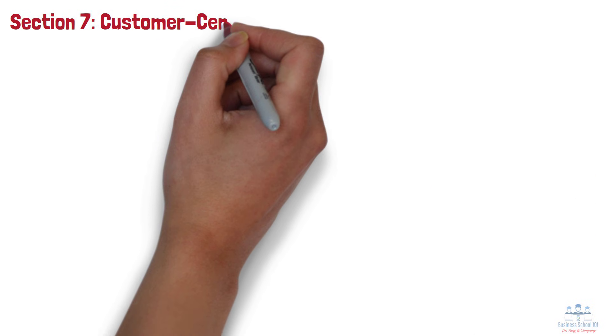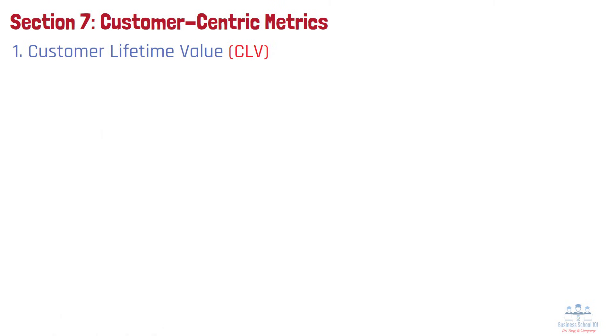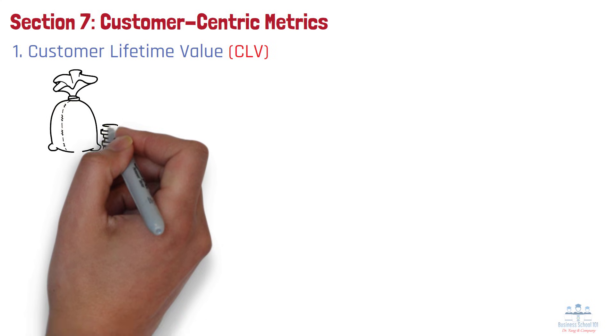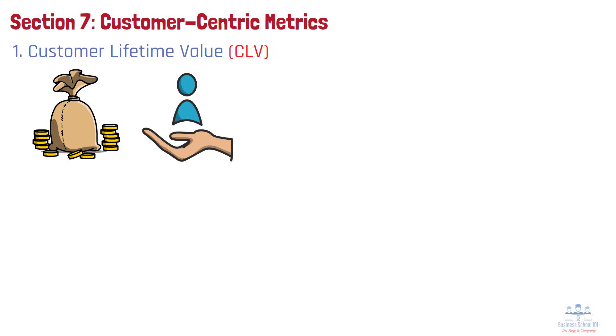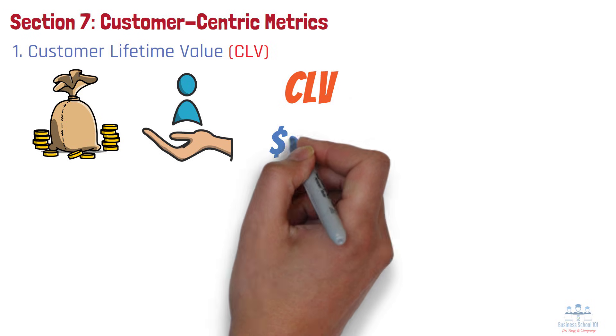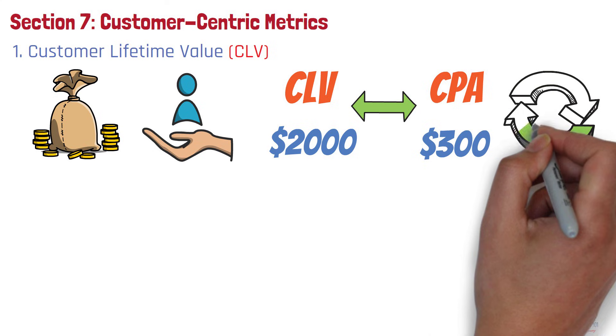Section 7. Customer Centric Metrics. Number 1. Customer Lifetime Value, CLV. It estimates the total revenue a business can expect from a single customer over their relationship. It helps in understanding how much you can spend to acquire and retain customers. For example, if your CLV is $2,000 and your CPA is $300, your business model is likely sustainable.